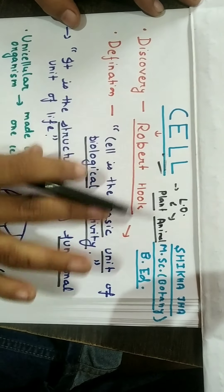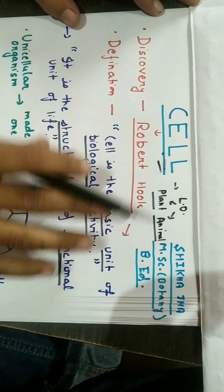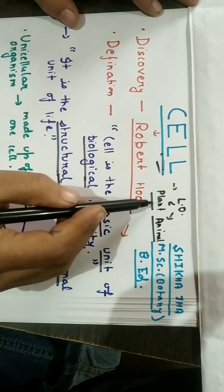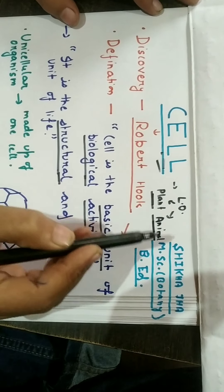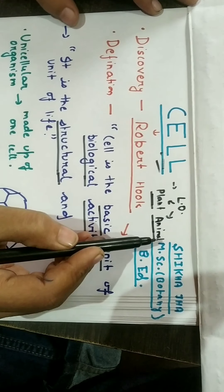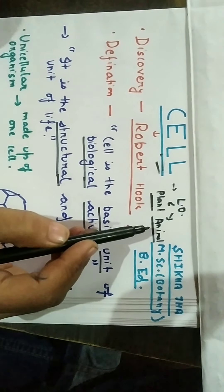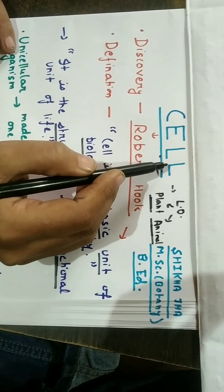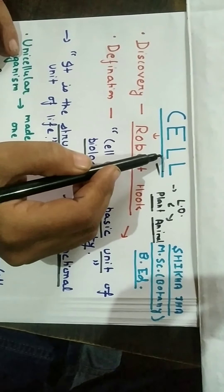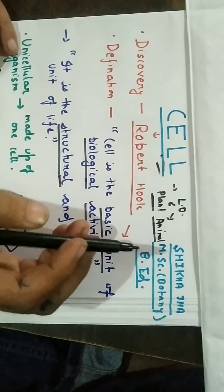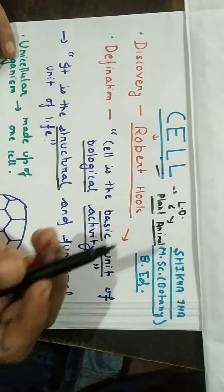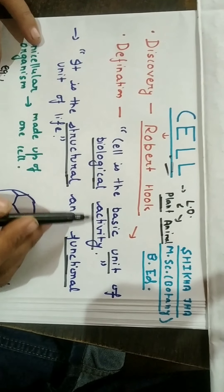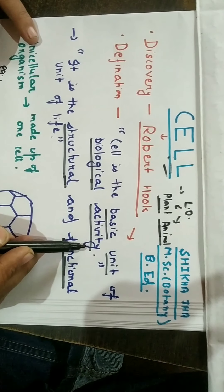Cell is present in every living organism. All the living organisms are made up of cell, whether it is plant, animal, or any other living organism. You take any example of any living organism, it must be made up of cell. So we can say that cell is the basic unit of all the biological activity.